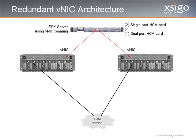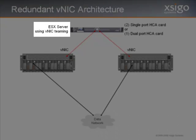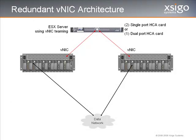The next configuration is the redundant VNIC architecture. There is no difference in how the hardware is configured; the difference lies in how the virtual interfaces are configured and used. Notice we are connecting to an ESX host. ESX supports a feature called NIC teaming, and that provides redundancy and failover capabilities. Each chassis presents a simple VNIC to the host, and ESX does the rest.